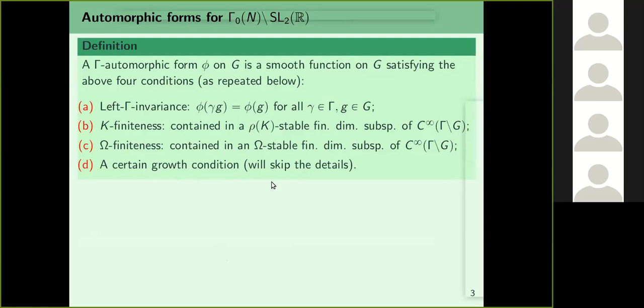If K-finiteness looks strange, here is an analogy. Suppose instead of G you had L2(S^1), where G = K = S^1 since S^1 is compact. What are the S^1-finite vectors in L2(S^1)? They are finite linear combinations of characters of S^1 — the trigonometric polynomials. So instead of all of L2(S^1), you have just the trigonometric polynomials. That is roughly how to think about K-finiteness.